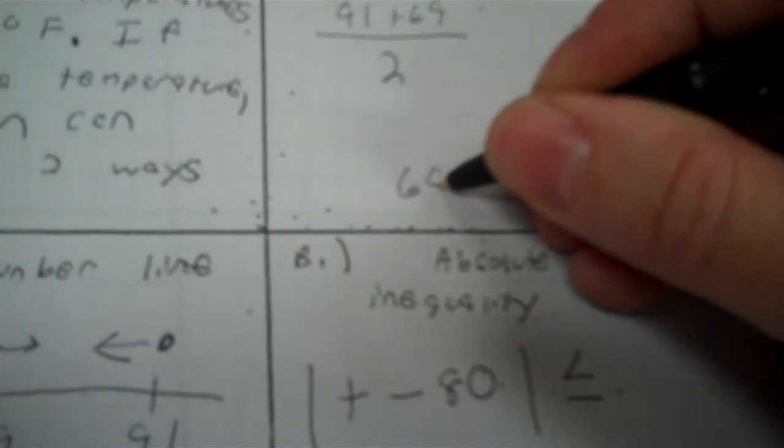Put your lowest temperature, then put 80, and then put 91. Now, to find what it's going by every time, how far 80 is from each number on a number line, you can just subtract. 91 minus 80 is 11. 80 minus 69 is 11.